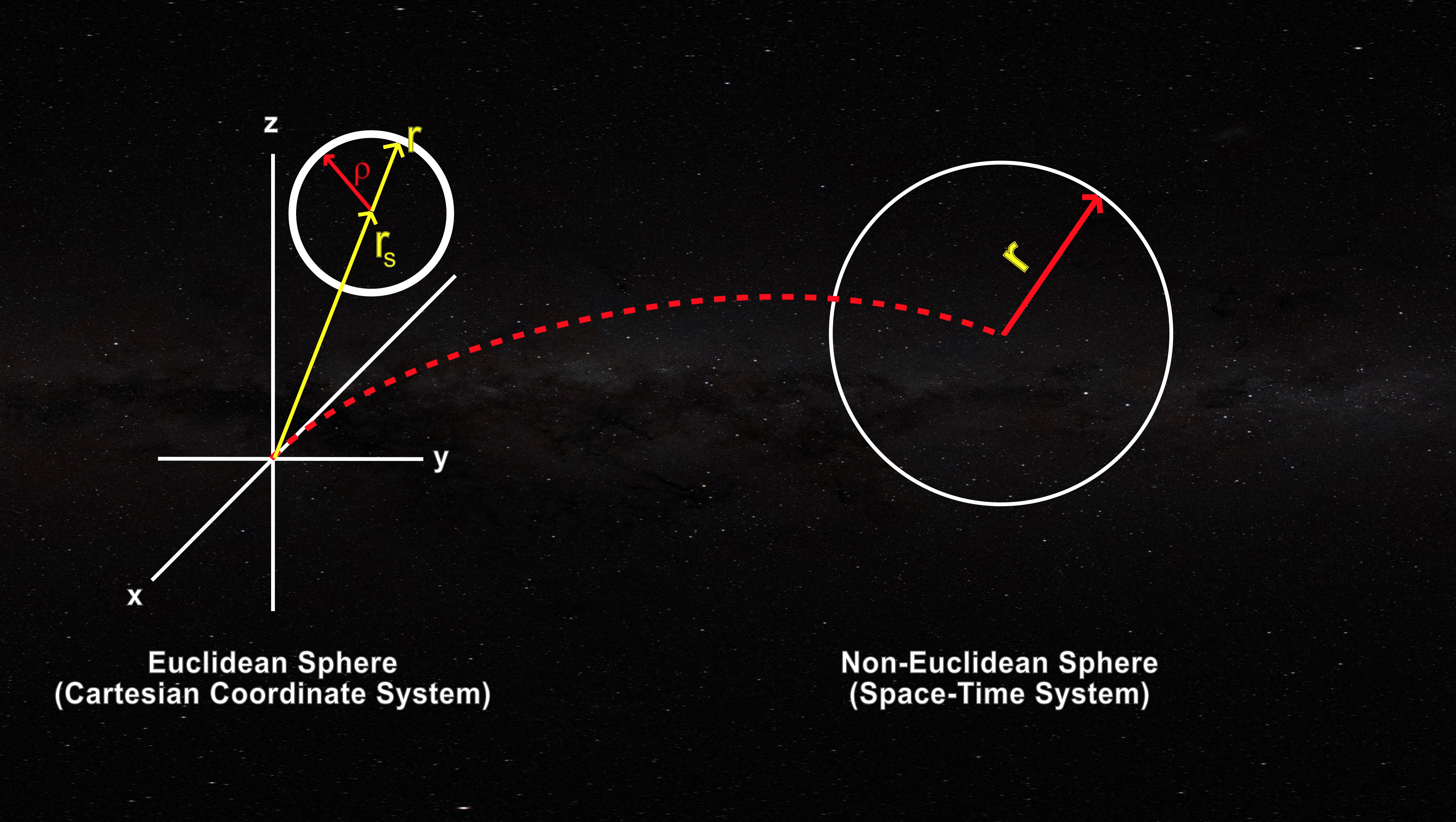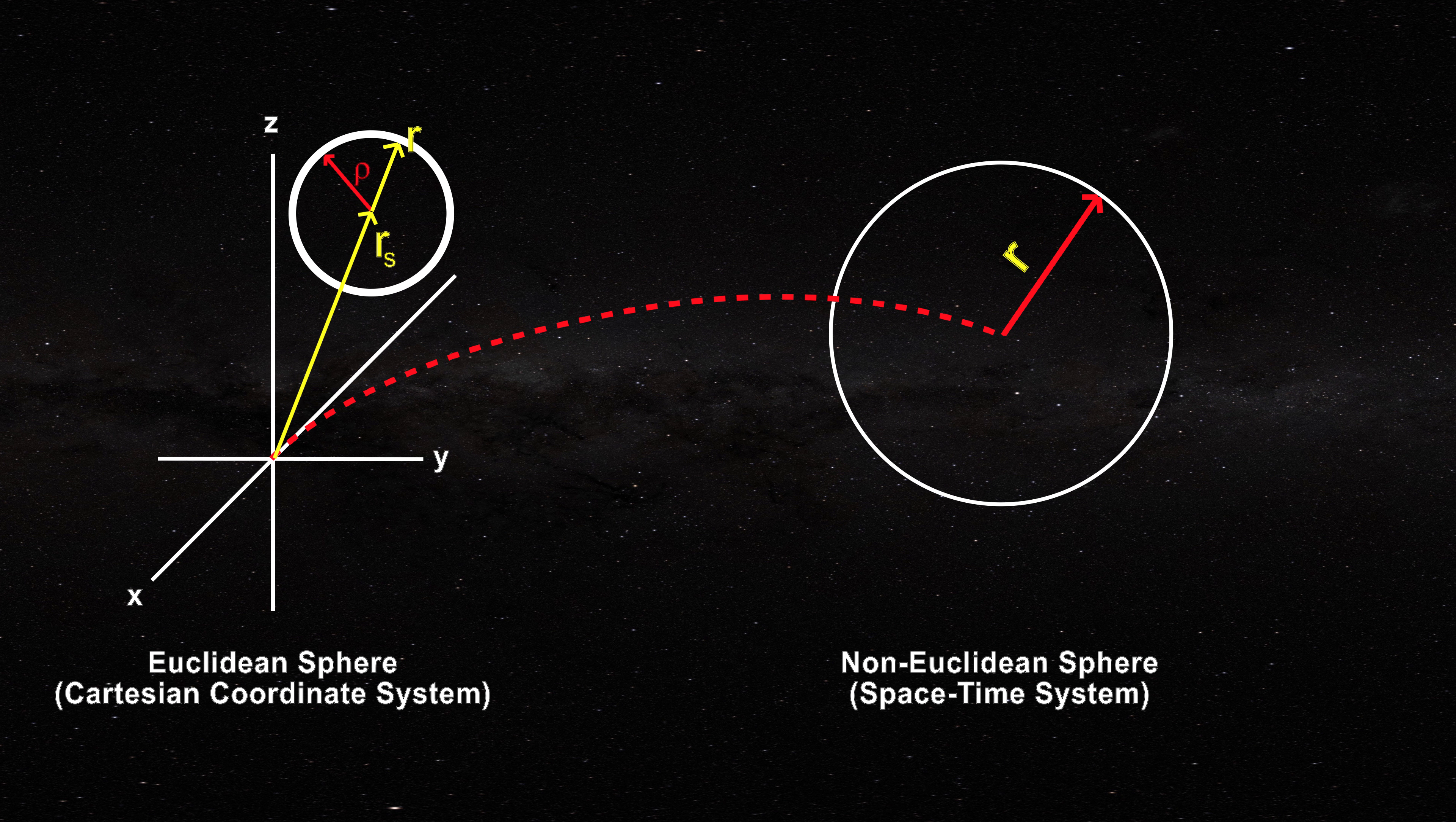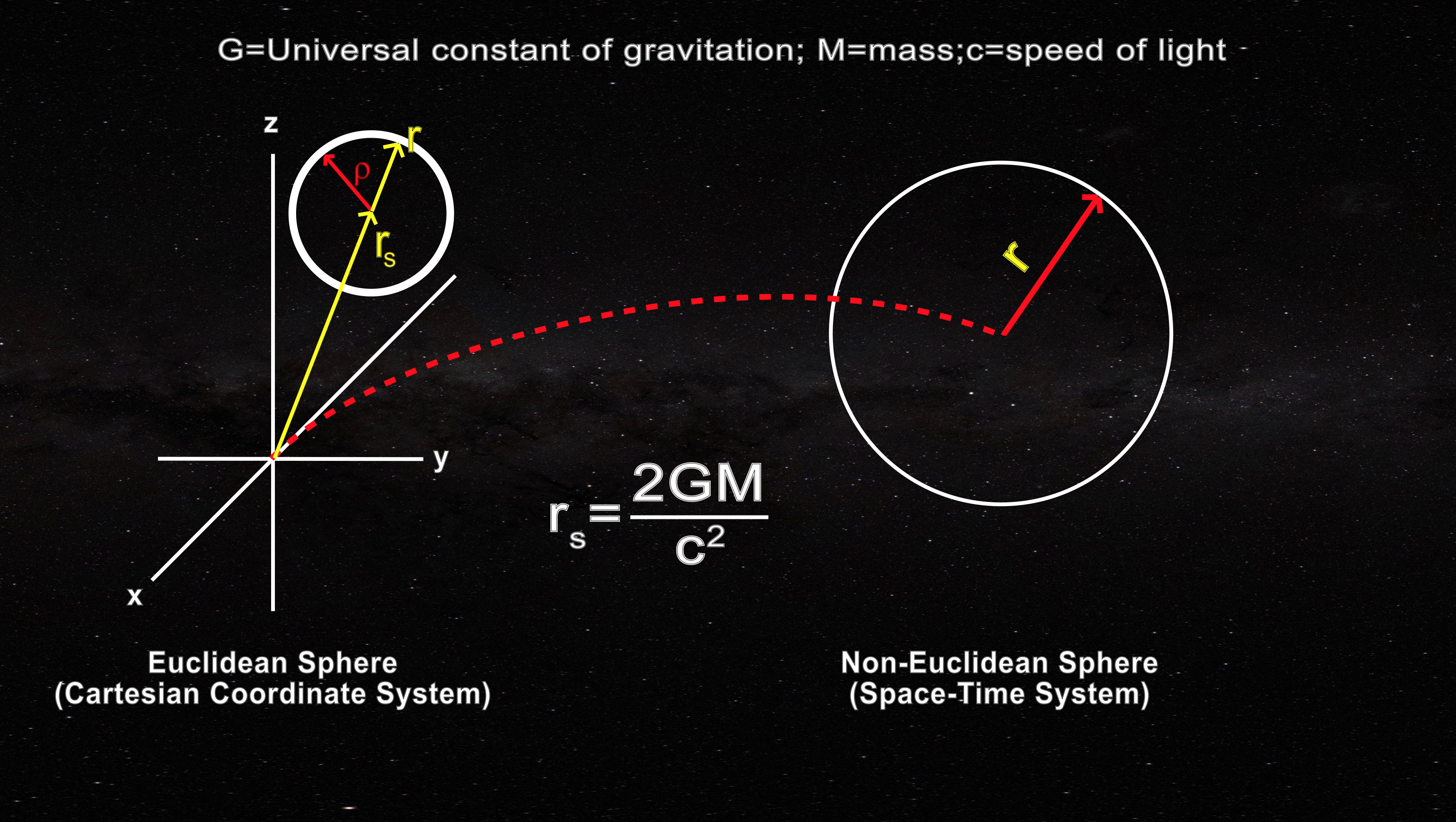But the radius of the Euclidean sphere is not little r, it is now rho. Furthermore, when little r acquires a certain value, it is known as the Schwarzschild radius of a black hole, given by this equation.